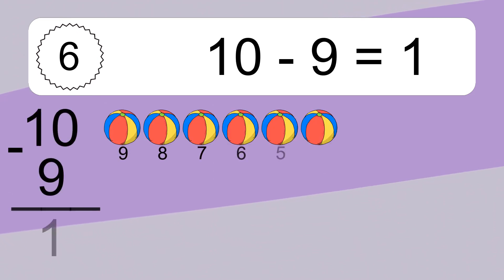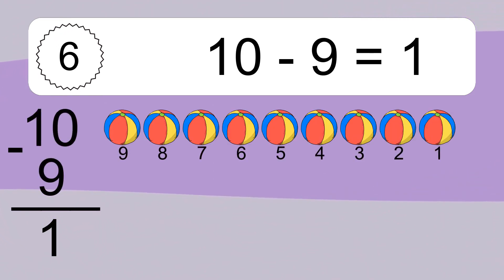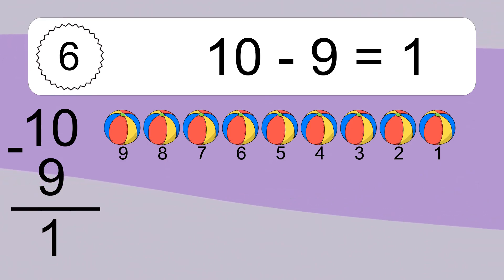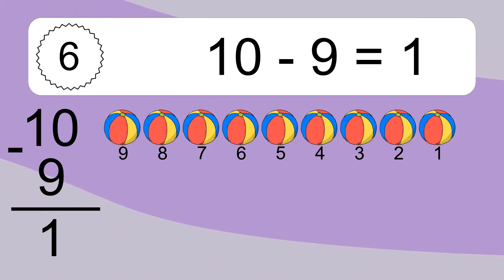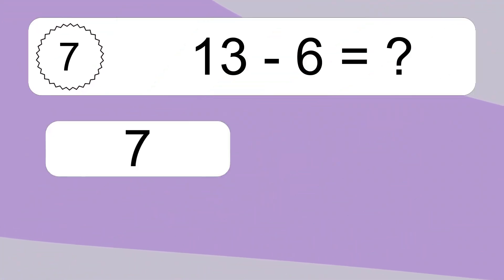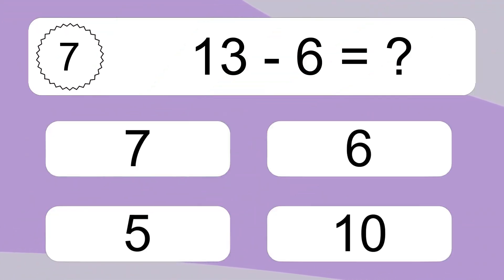10 minus 9 equals what? 10 minus 9 equals 1. Let's count it: 9, 8, 7, 6, 5, 4, 3, 2, 1.